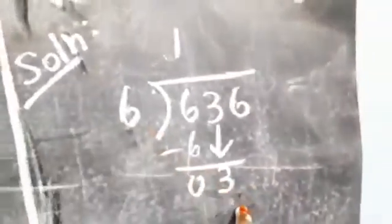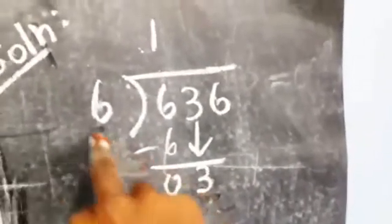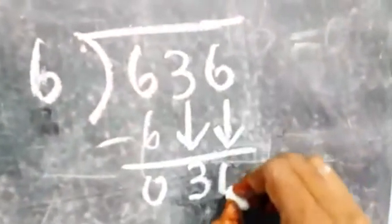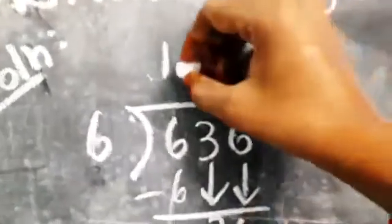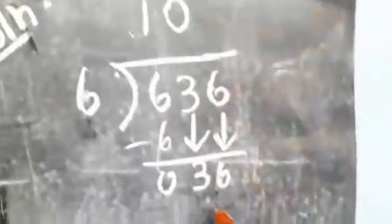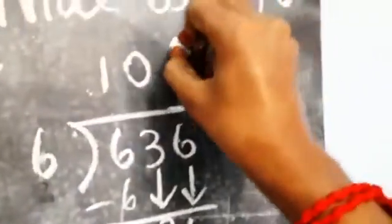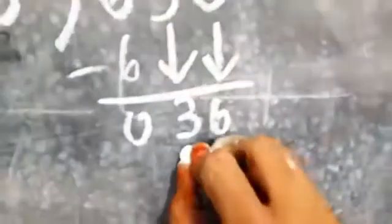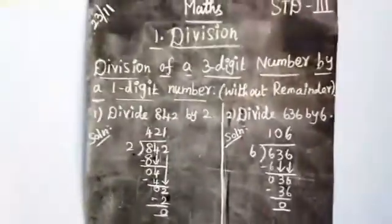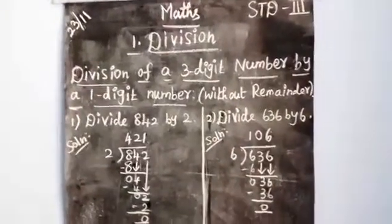3 cannot be divided by 6 because 3 is smaller than 6, so we cannot divide. Bring down the ones place as well — bring down 6 also. Since 3 could not be divided, put a zero in the quotient, then bring down both digits to get 36. How many 6s are 36? Yes, 6 sixes are 36. Subtract: 36 minus 36 is 0. Therefore, quotient is 106 and remainder is 0.